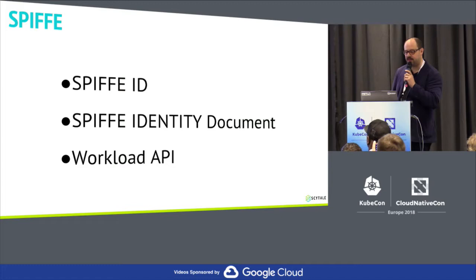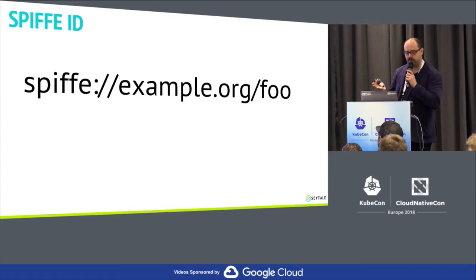A SPIFFE ID is a URI scheme. SPIFFE ID does not dictate what that URI scheme should look like, but the domain is what we would call the trust domain of a deployment. Anything that comes after the slash would be the identity of the workload.